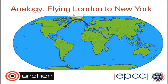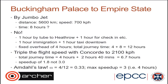Here's a nice analogy to make these two ways of quantifying scaling clearer. Let's say we want to fly from Buckingham Palace to the Empire State Building. We fly in a jumbo jet, covering 5,600 kilometres at 700 kilometres per hour. That takes about 8 hours — but that's just the flight time.